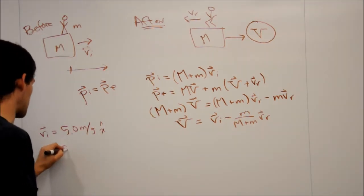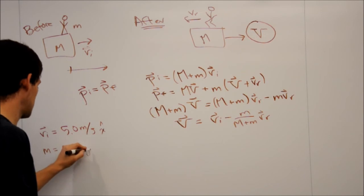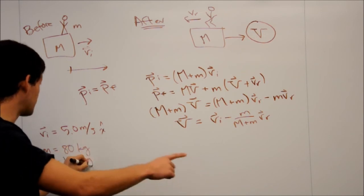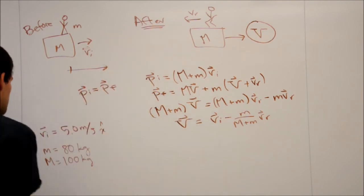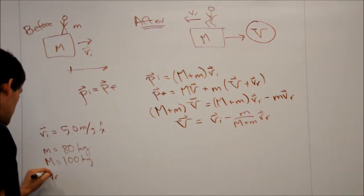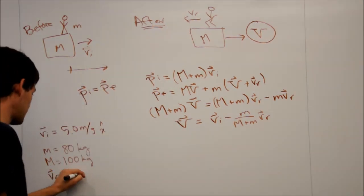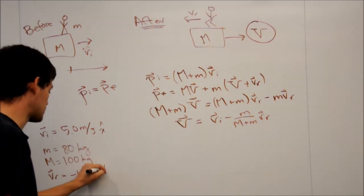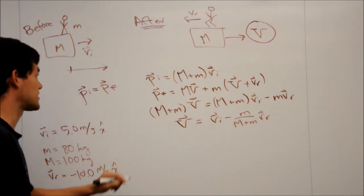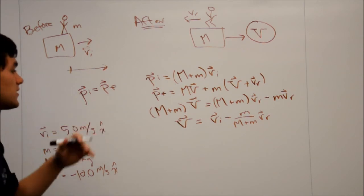Little m equals 80 kilograms. Big M equals 100 kilograms. And VR, which is his velocity relative to the cart, is going to be negative 10 meters per second x hat. And remember, the reason it's negative is because he's moving to the left instead of the right.